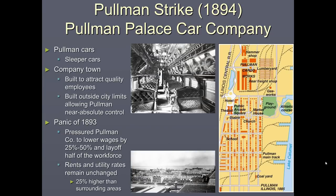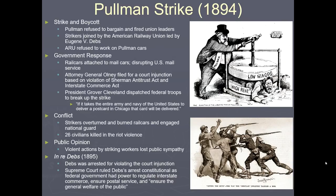The Pullman Strike of 1894 involved workers at Pullman Palace Car Company, who made luxury railroad cars and decided to cease work and block the railroads. Because the U.S. mail was transported in Pullman cars, halting them was a federal crime. Grover Cleveland intervened, saying, 'If it takes the entire army and Navy of the United States to deliver a postcard to Chicago, that card will be delivered.' Strikers overturned and burned rail cars and engaged National Guard troops. Twenty-six civilians were killed in the riot. Once again, this fed into the notion that labor union workers were violent terrorists.